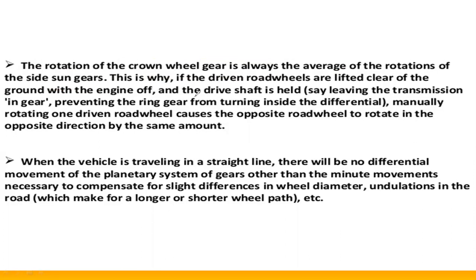If the driven road wheels are lifted clear of the ground with the engine off and the drive shaft is held, it leaves the transmission in gear, preventing the ring gear from turning. Manually rotating one driven road wheel causes the opposite road wheel to rotate in the opposite direction. When the vehicle is traveling in a straight line, there will be no differential movement of the planetary system other than minute movements to compensate for slight differences in wheel diameter or fluctuations in the road.